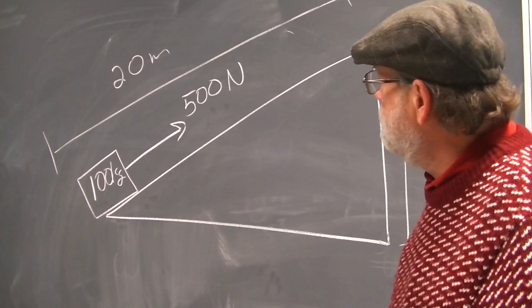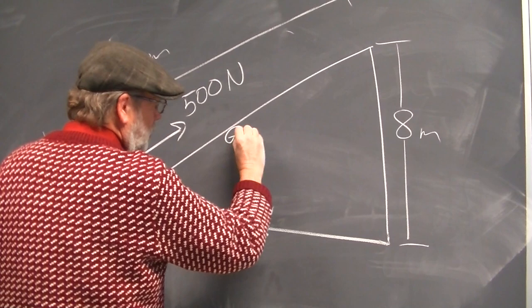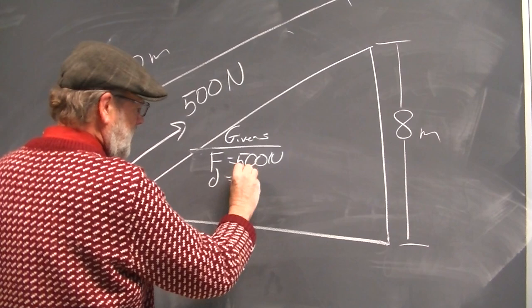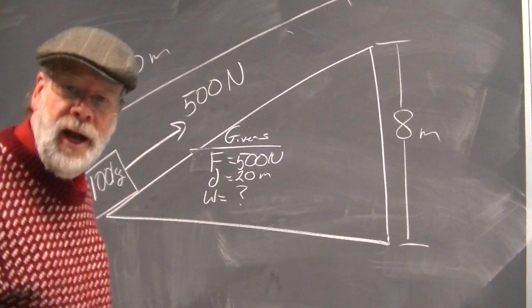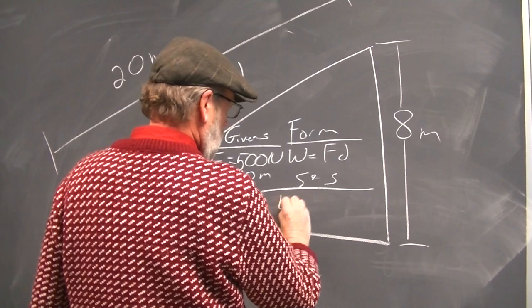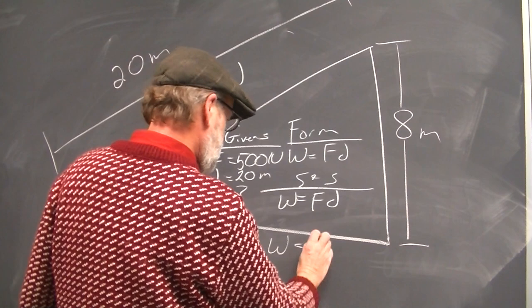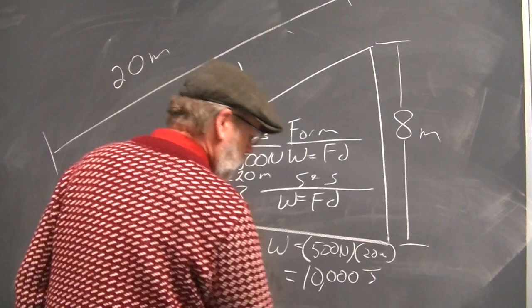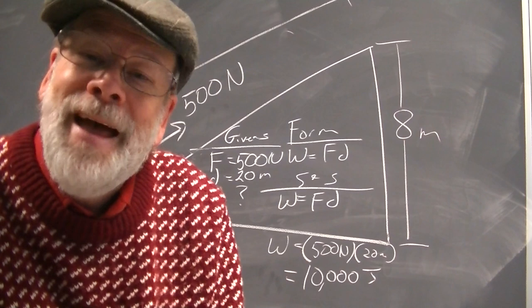So how much work was done? Givens: force equals 500 newtons, distance equals 20 meters. We seek to understand how much work was done. The formula: work equals force times distance. Work equals 500 newtons times 20 meters equals 10,000 joules. So I did 10,000 joules worth of work on it.